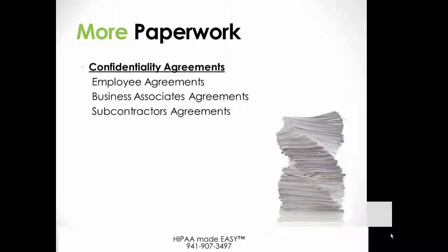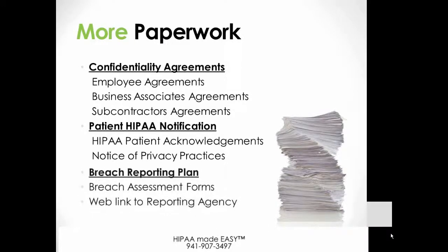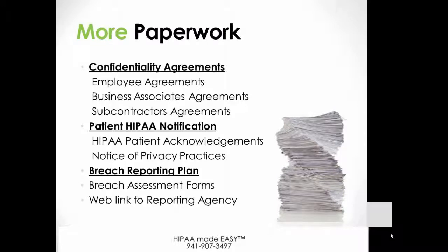Basically, that equates to a lot more paperwork. You'll have to have your employees sign new confidentiality agreements, business associates sign new confidentiality agreements, and they'll have their subcontractors sign agreements as well. Within your office, you'll have to have all patients sign new HIPAA patient acknowledgements and give them a right to see the changes in Omnibus rule on a new Notice of Privacy Practices, posted in your office and on your website. There is a huge change in breach reporting — you'll have to have a plan with new breach assessment forms that you connect and email to a web link with the U.S. Department of Health and Human Services. Breaches get reported for very low compromise, so you'll have to learn those rules and set up a protocol for breaches and breach reporting in your office.